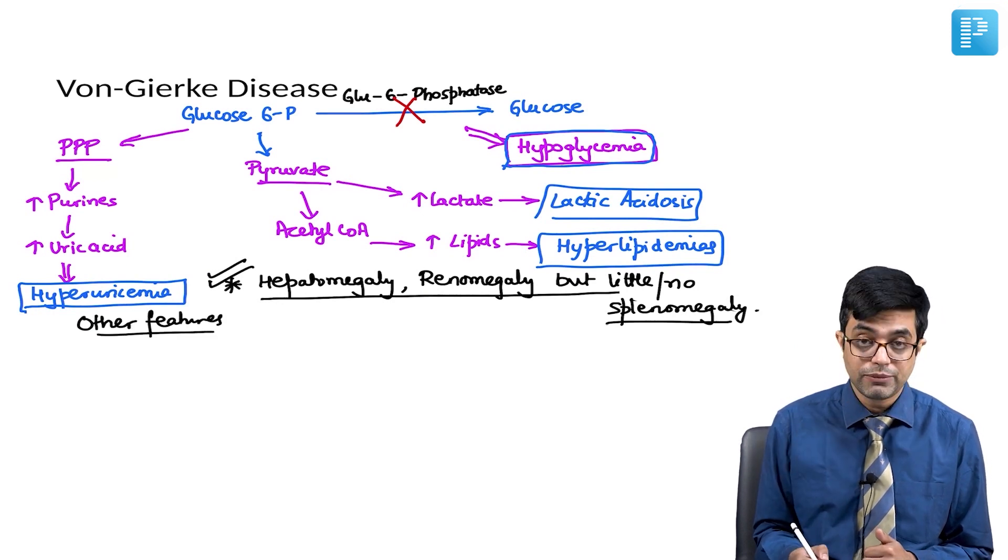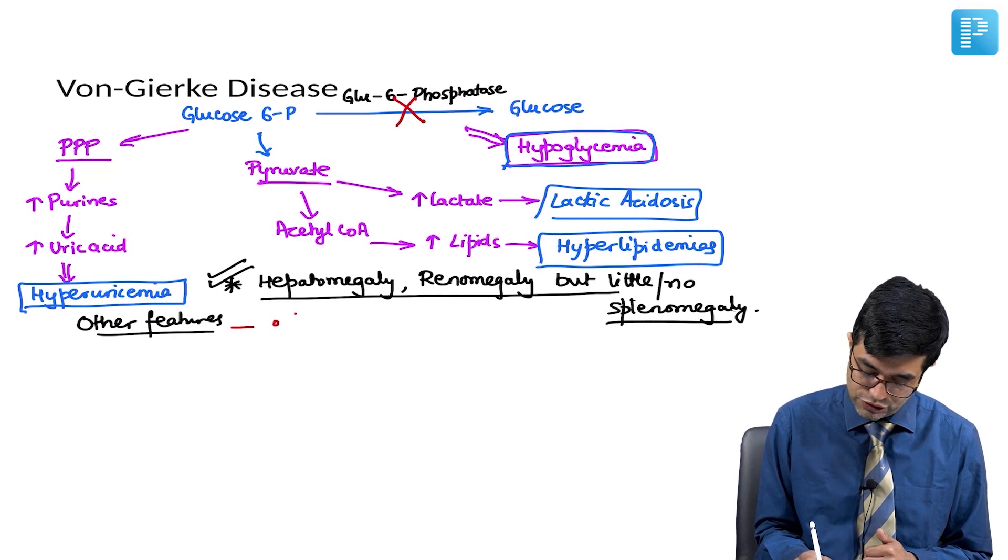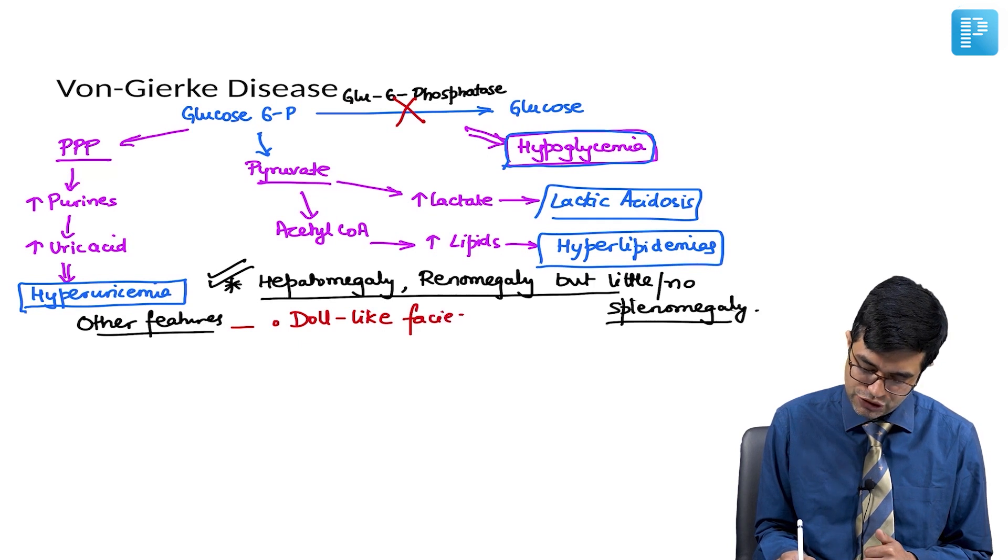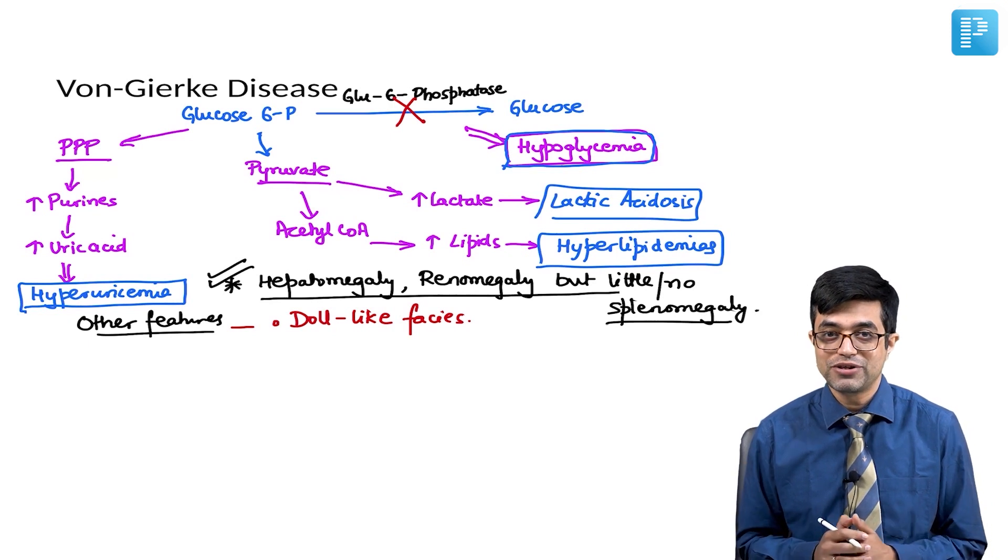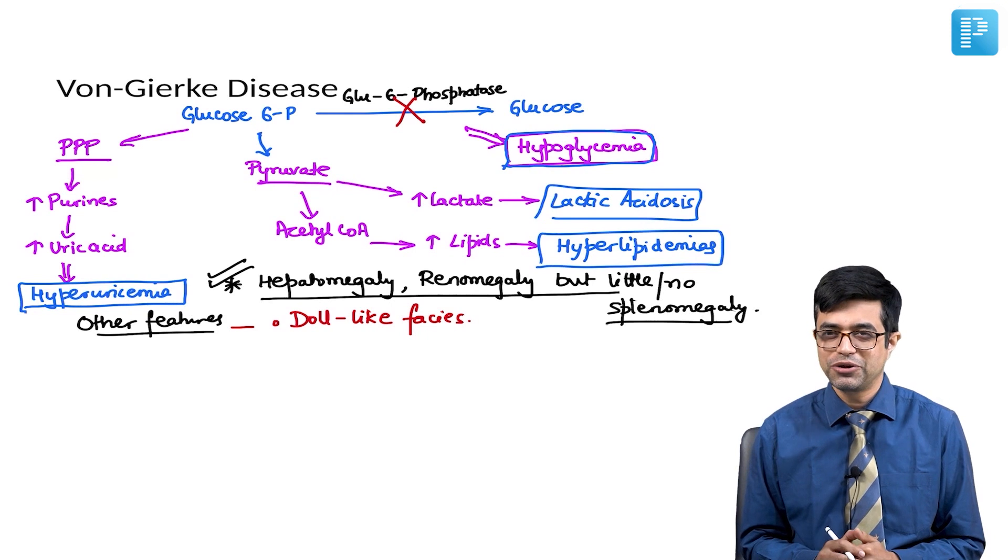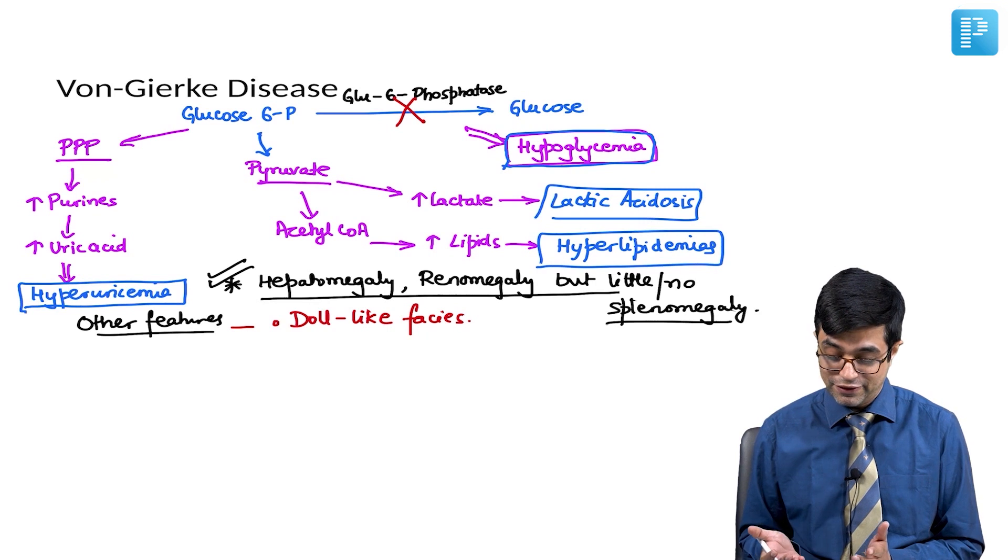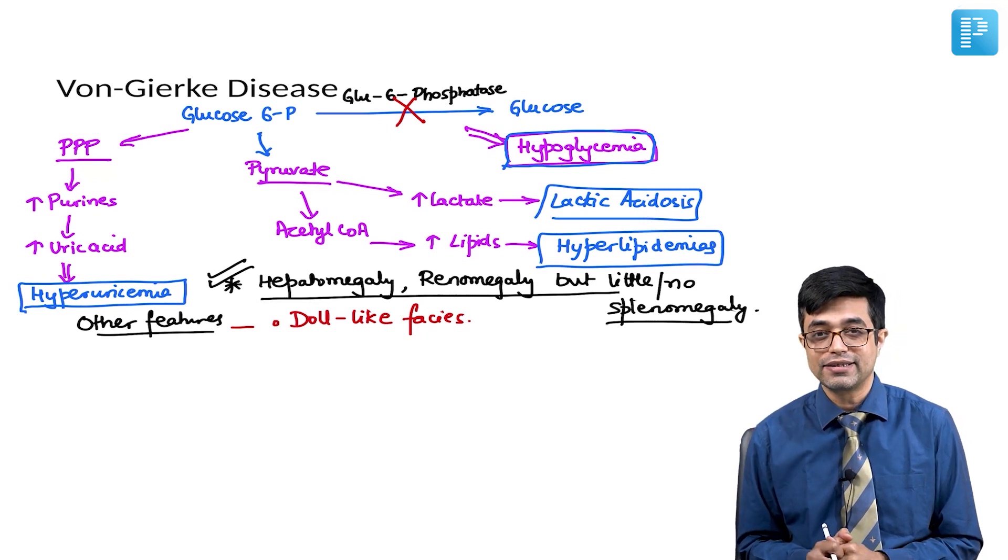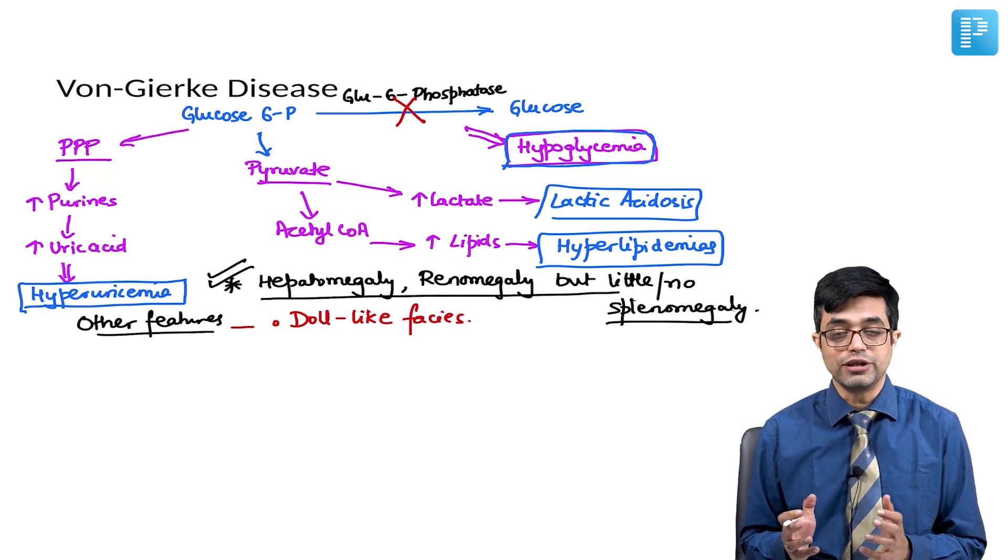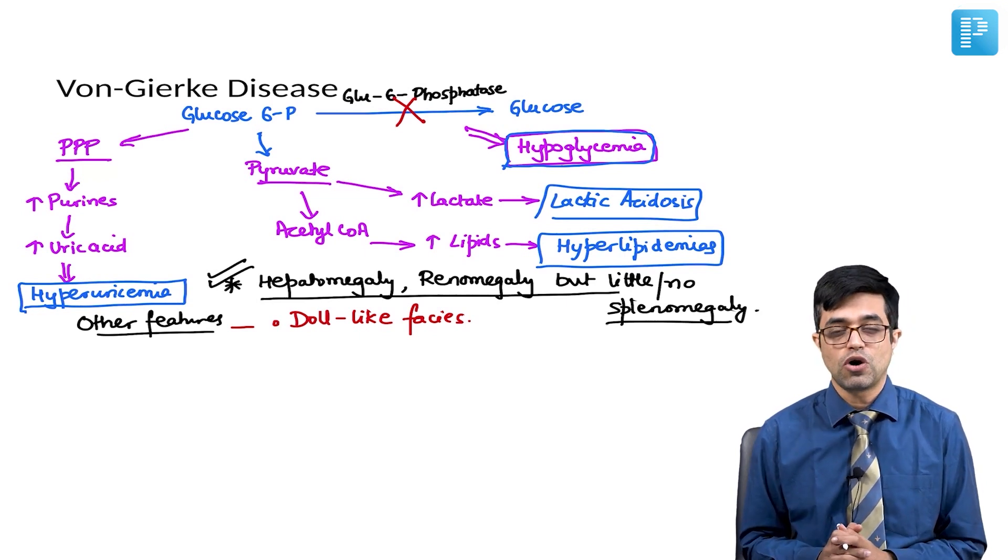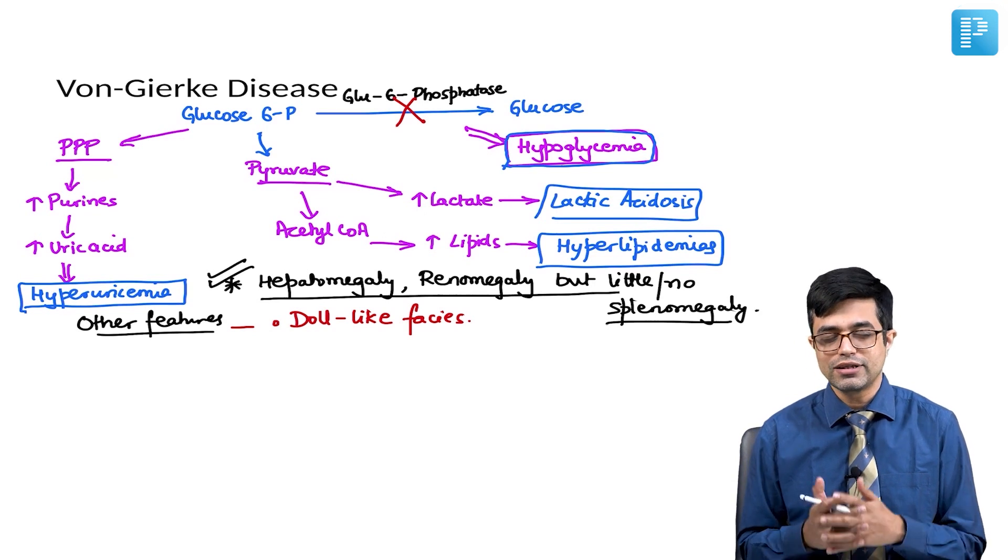And then you have the other features which can be seen in Von-Gierke disease. The other features you need to remember include: these children have a doll-like face. Having a cute doll-like face is not always a good thing. In medical profession, if you are a clinician, if you have a baby face, people do not take you seriously. That is one aspect. Of course, if you have a doll-like face in kids, it is sometimes associated with certain syndromes, it is sometimes associated with inborn errors of metabolism. The common one is Von-Gierke disease.